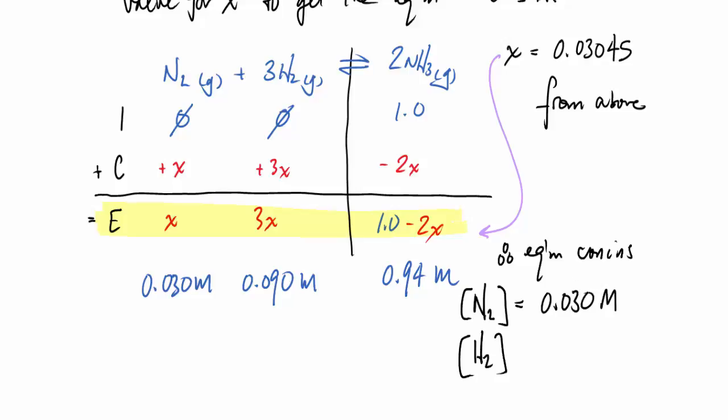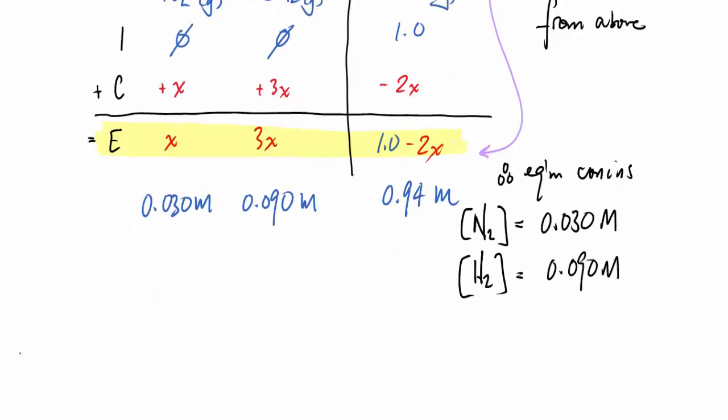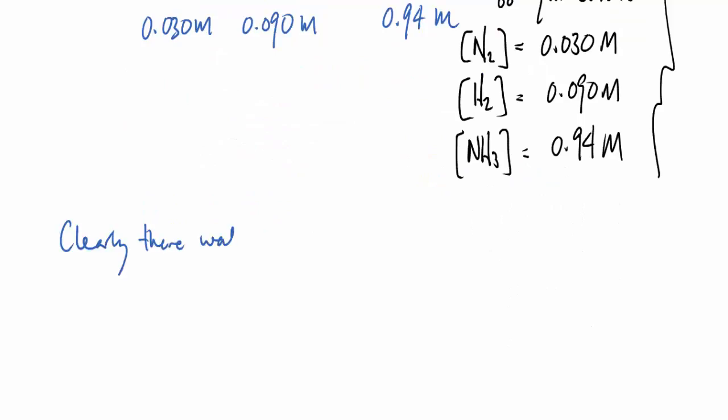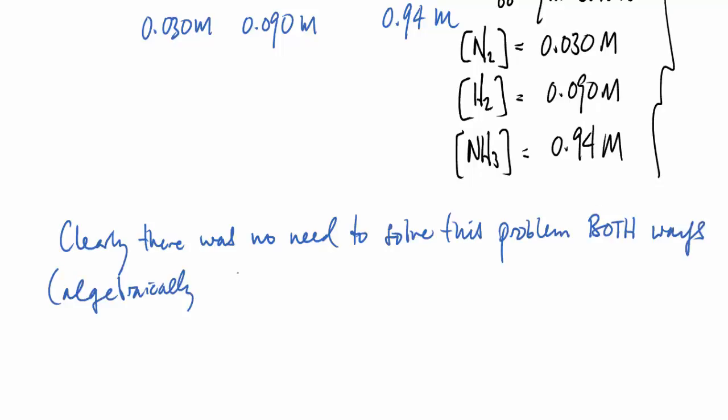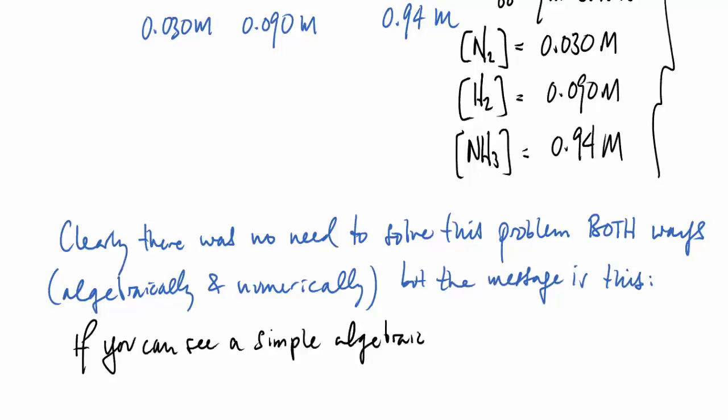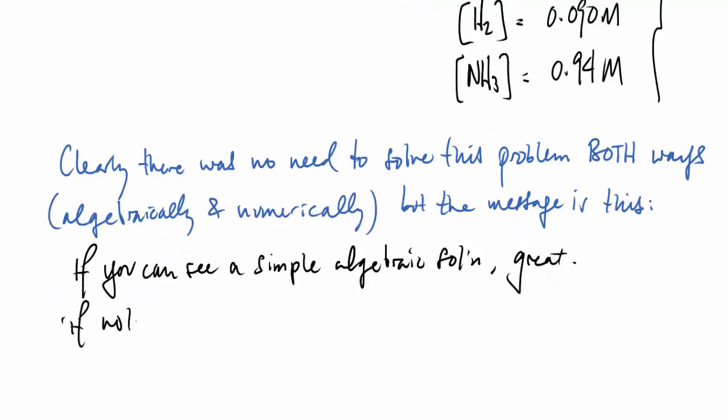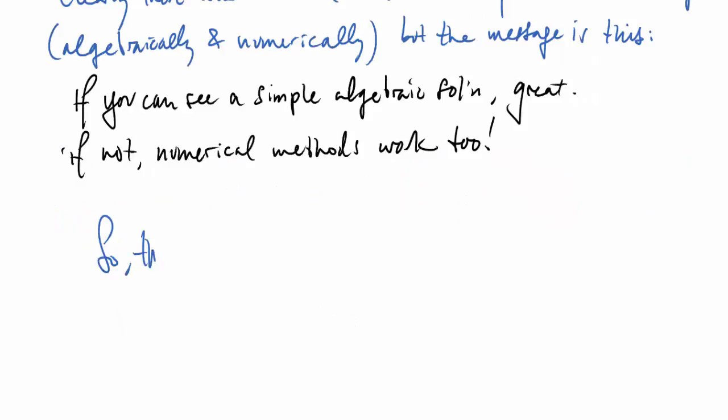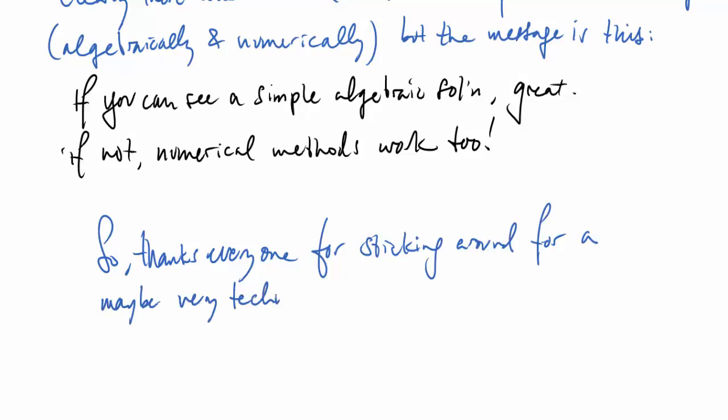Now, you might think, how special is that? Why did you bother go through all this numerical thing when you could get it algebraically? And you would be right to think that. So clearly there was no need to do it both ways. And I think that the goal here, obviously the algebraic and numerical solutions wound up being the same, but the message is this. If you can see a simple algebraic solution, then I would say, great, go for it. And if not, these numerical methods work too. And they allow you to get after quite a bit more complex problems. So learn it simple, and you can try it on hard problems.